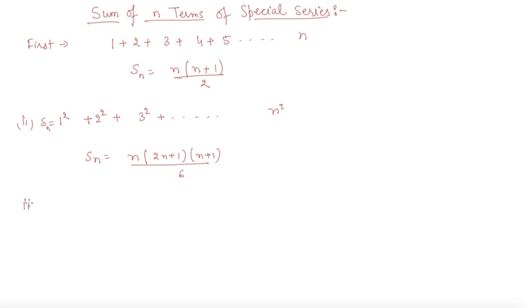So the third series is S_n equals 1 cube plus 2 cube plus 3 cube up to n cube. And the formula for this is the square of S_n of just the simple terms. So this S_n is n into n plus 1 squared upon 4. So the total square of this is the sum of the cube terms.